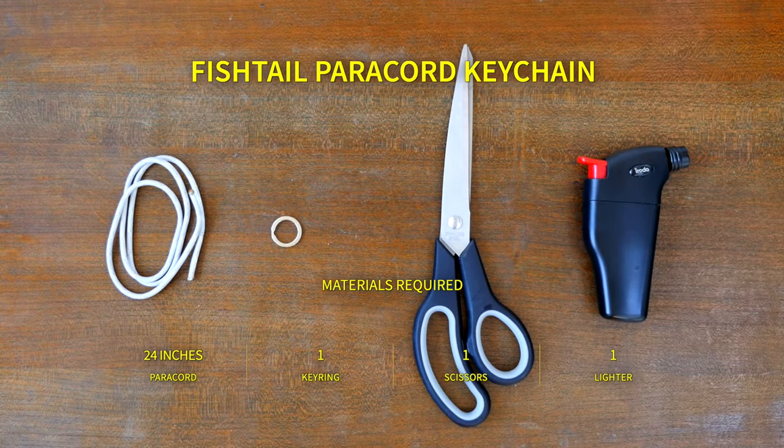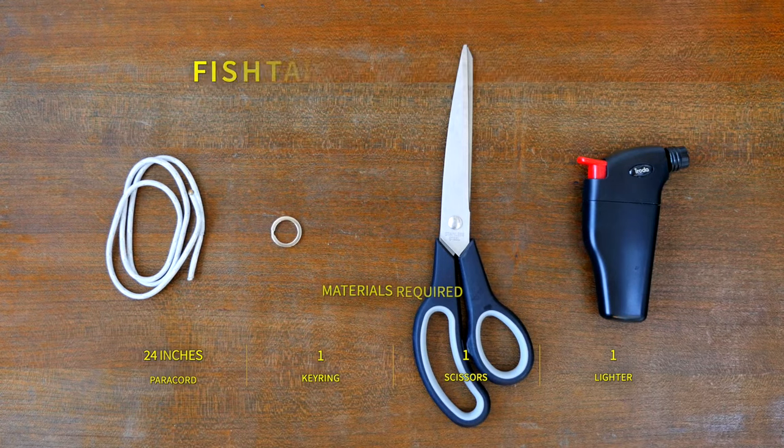To tie this keychain you're going to need 24 inches of paracord, a key ring, a pair of scissors, and a lighter.